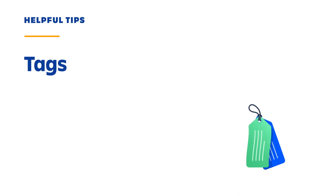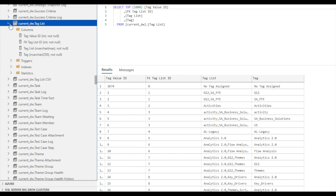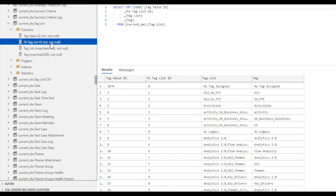The last helpful tip I'm going to share with you is where to find the data for tags. Tags in Jiraline can be used with Jiraline work items as a way to assign a label or a category that can be used as a filter in the Jiraline user interface. Tag values are contained in the tag list table, and the table is joined on the tag list ID foreign key column within the work item table.